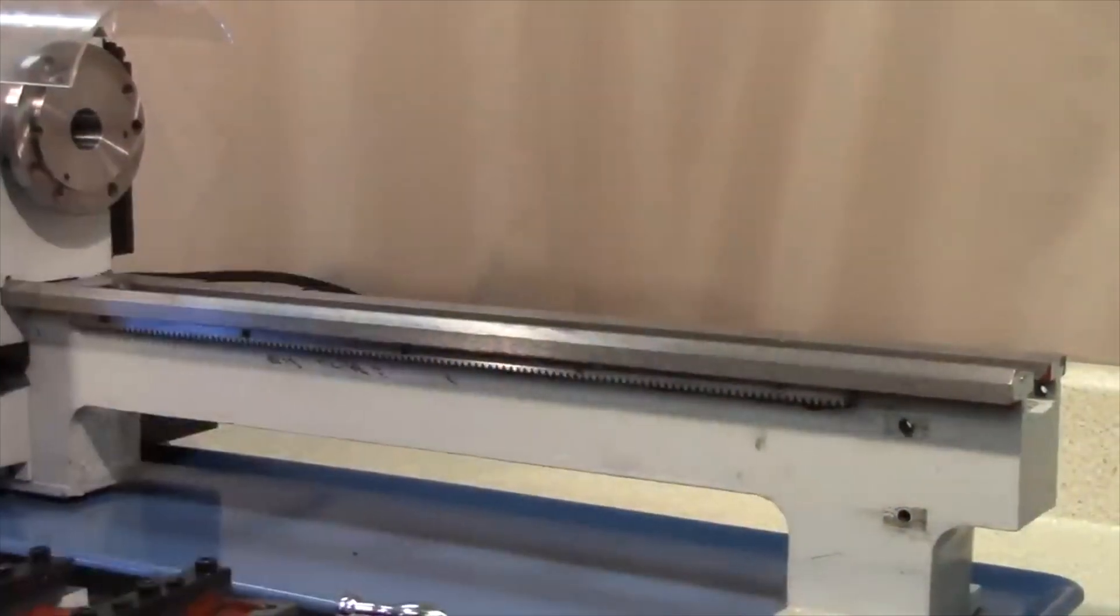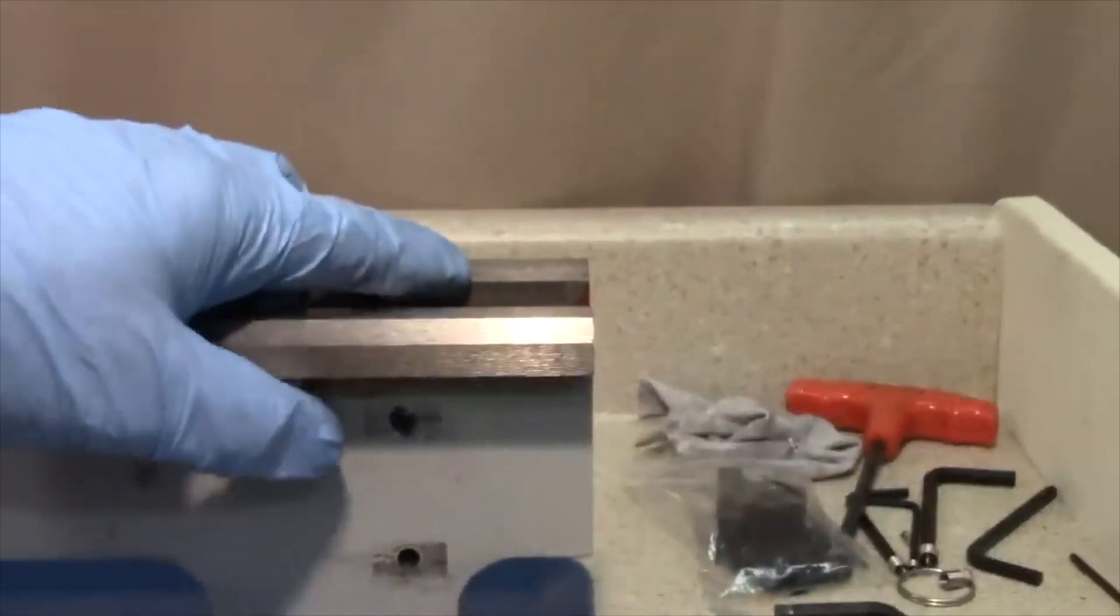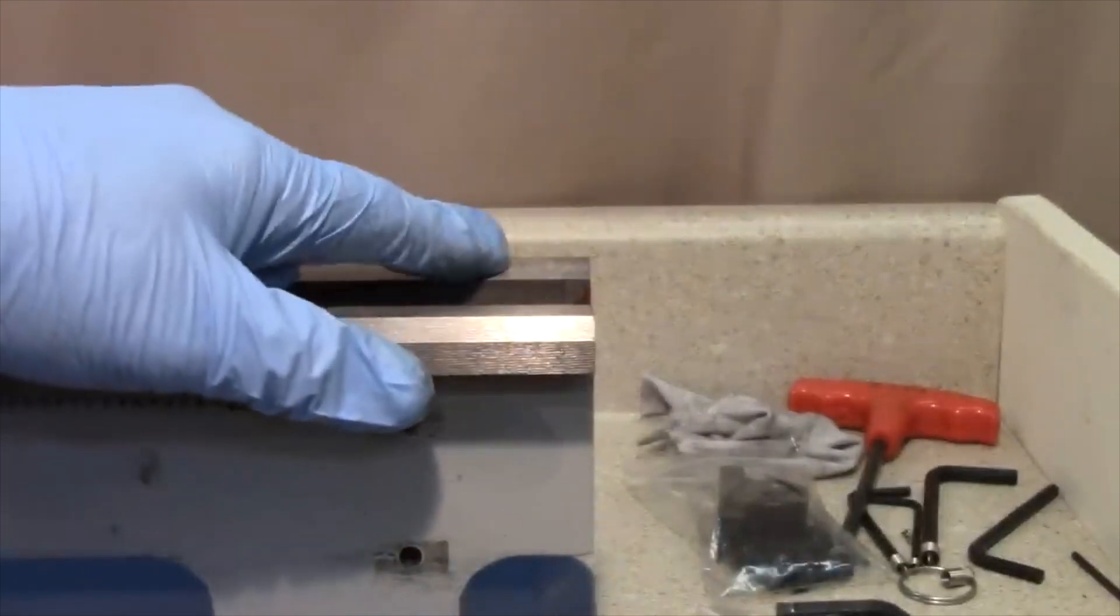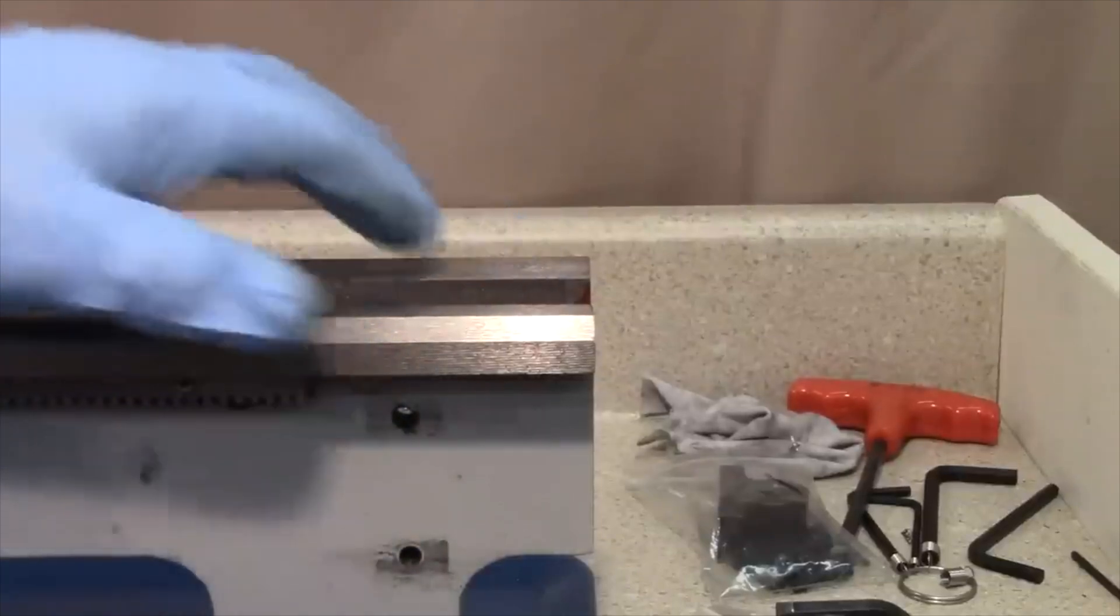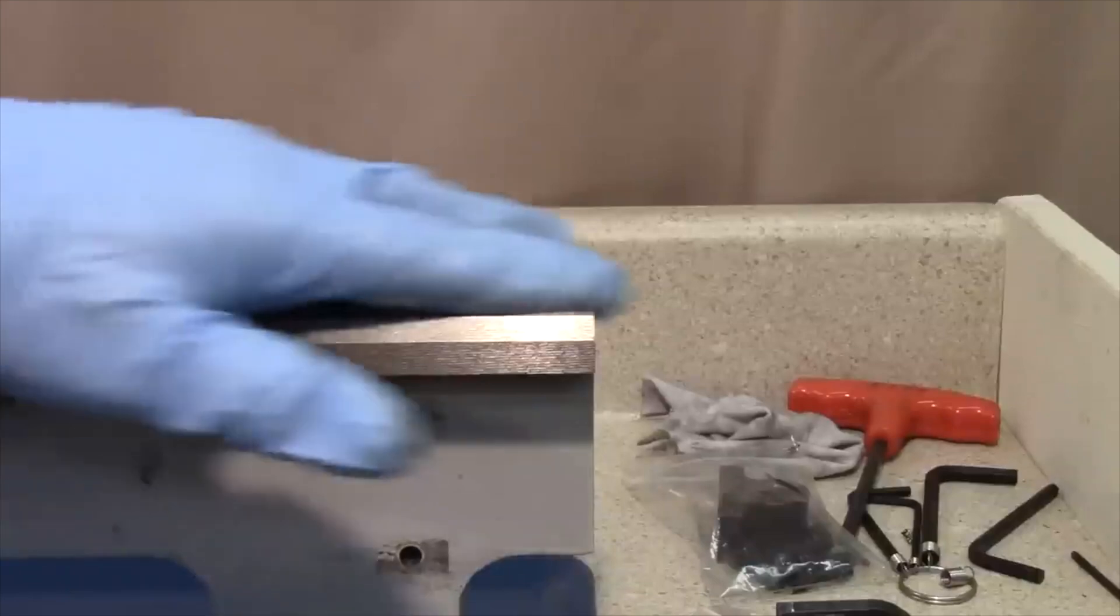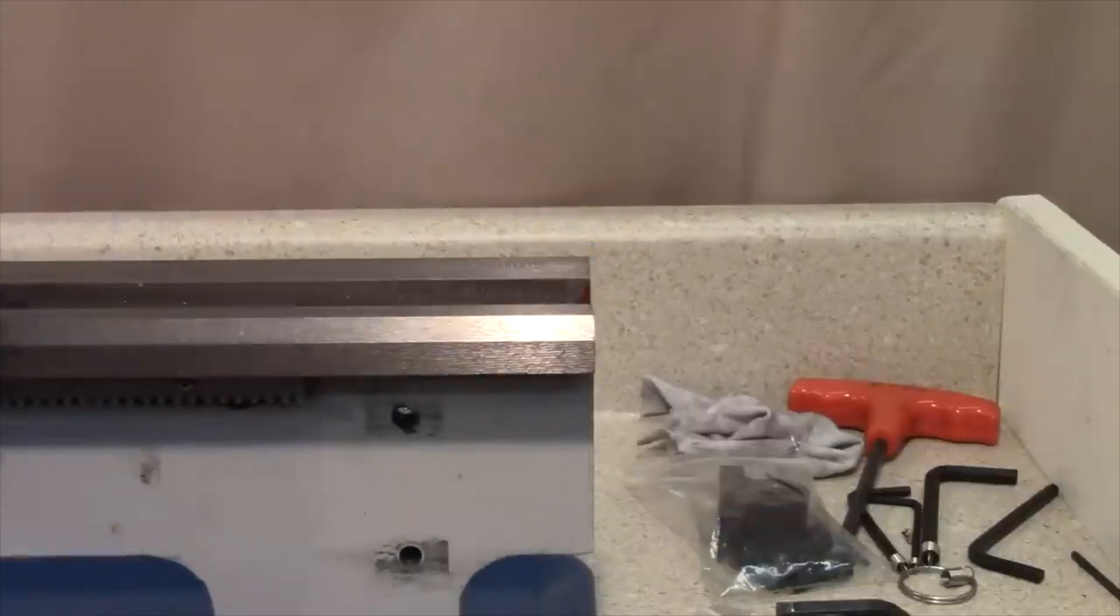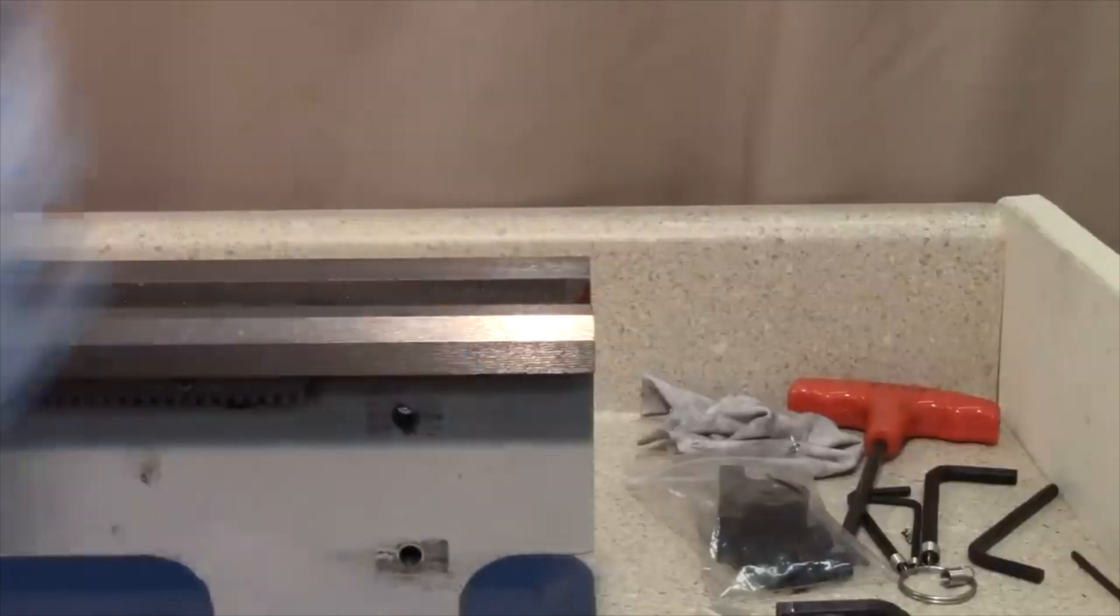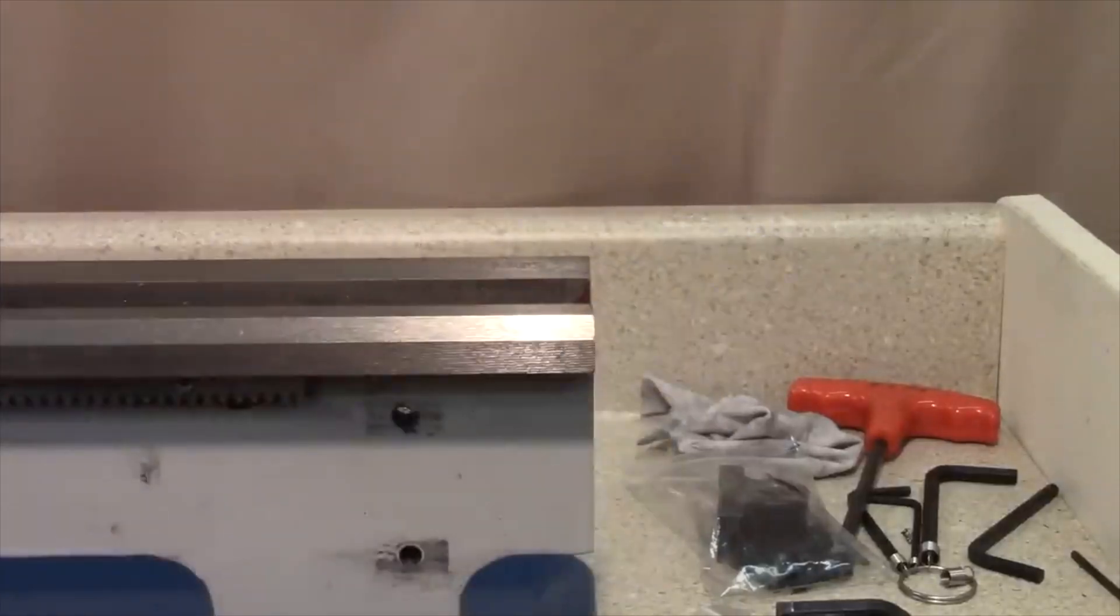Sometimes on older lathes, down here on the back end of the ways, there's a serial number stamped in here. On the old ones it was actually stamped in with metal stamps, and that would raise up the metal. That raised metal area sometimes would prevent the saddle from sliding off. So if you have trouble getting it off the end, you may need to take a stone or a file and gently file those down, or you can just loosen the screws now that you have access to them and provide enough clearance to slide it off the end.